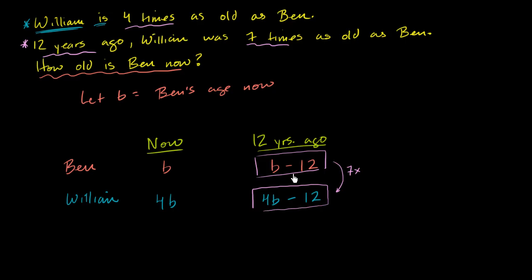Or another way to think about it, take this number and multiply it by seven, and you're going to get this number. So let's see if we can set that up as an equation. So we can have seven times Ben's age twelve years ago, b minus twelve, is going to be equal to William's age.